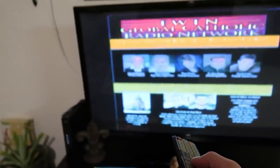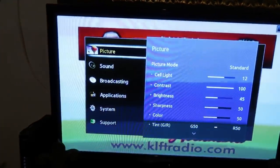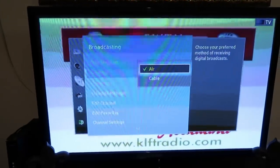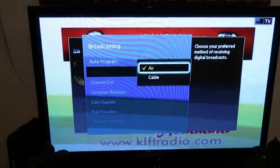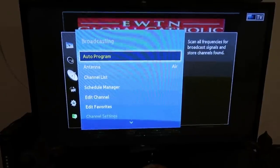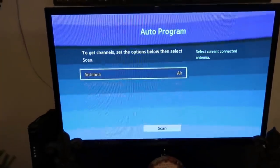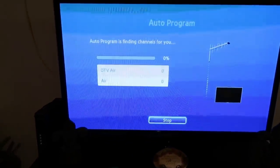I'm gonna take my remote, go to menu, broadcasting, antenna, make sure it's on air. Okay, and then auto program start. Here, and scan.